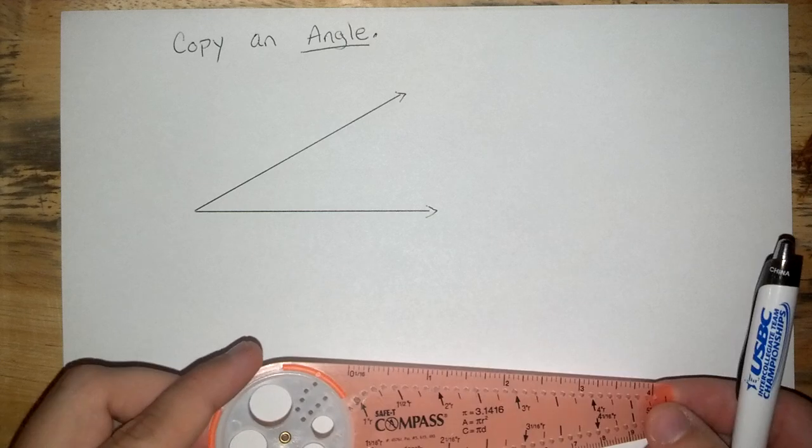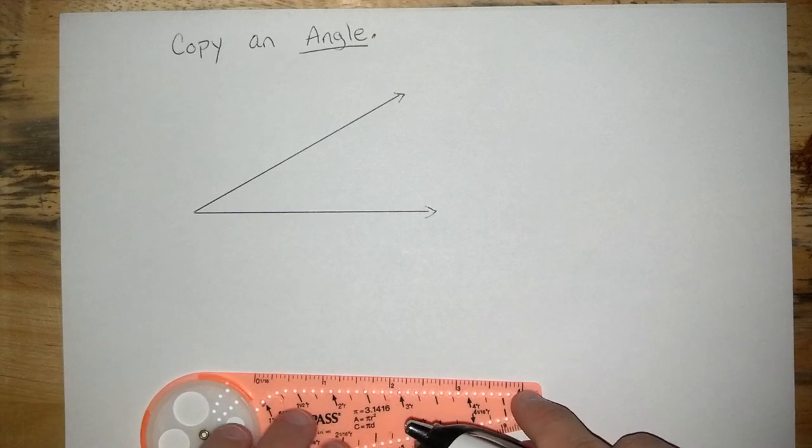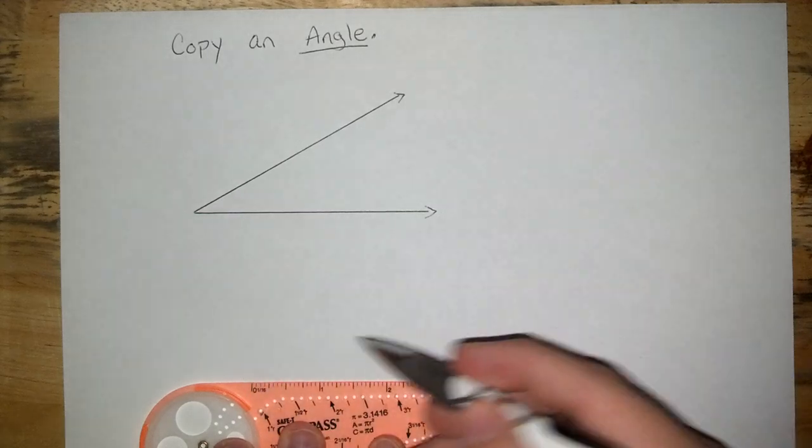Next, go ahead and use your safety compass and create a ray that will act as one of the sides for your angle.